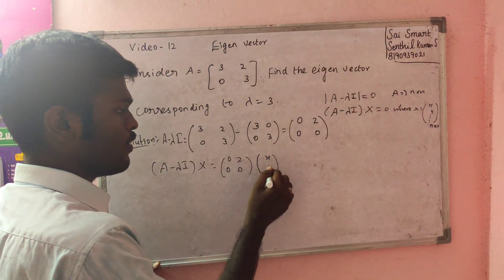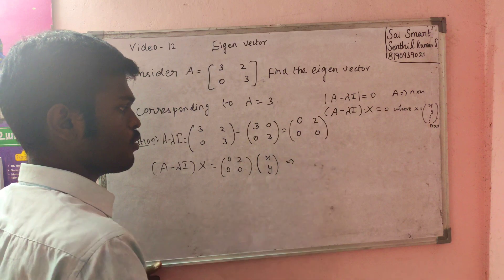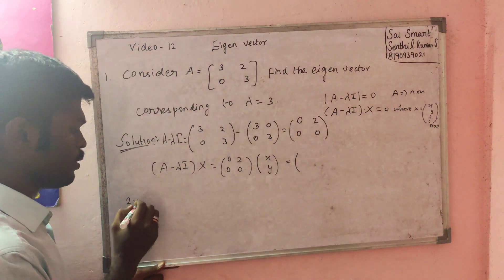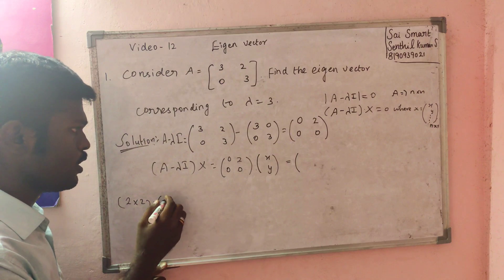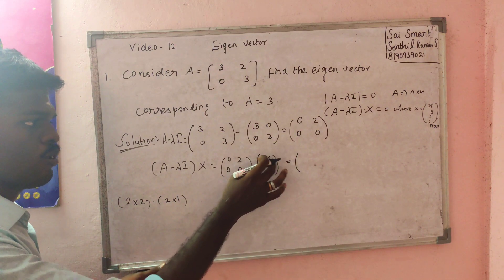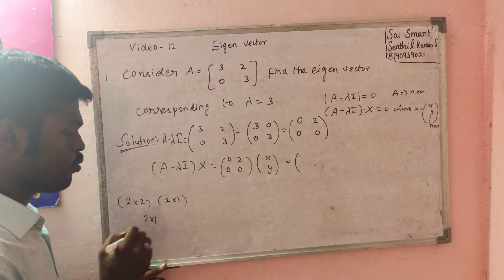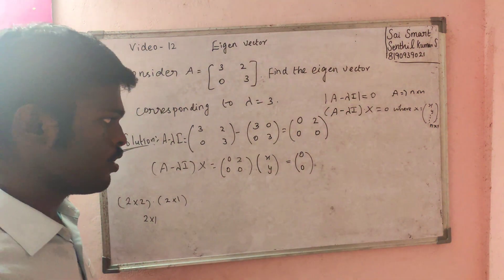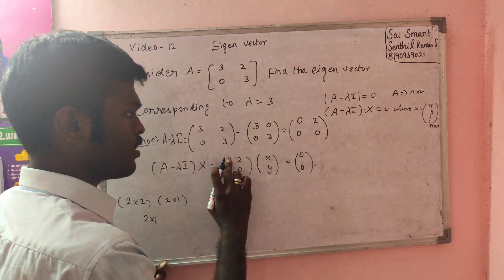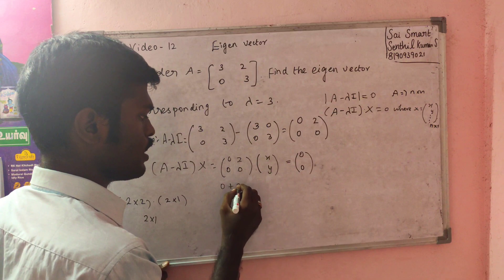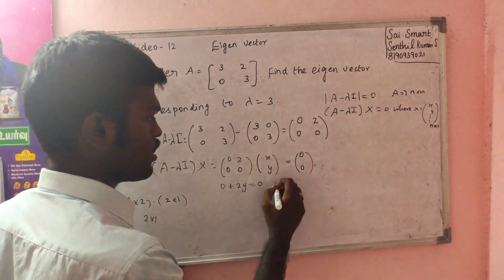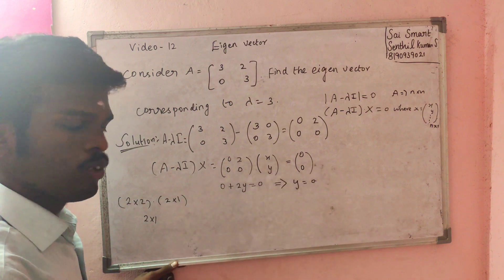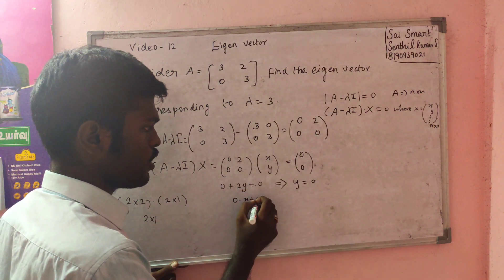We get the value of [0, 2; 0, 0] times [x; y] equals [0; 0]. Multiplying out: 0 times x plus 2 times y equals 0, and 0 times x plus 0 times y equals 0. This implies that 2y equals 0, so y equals 0.